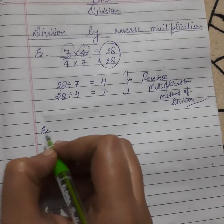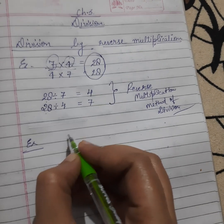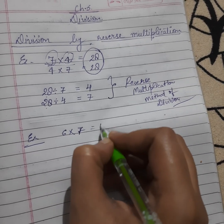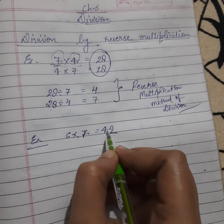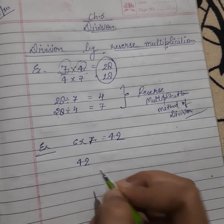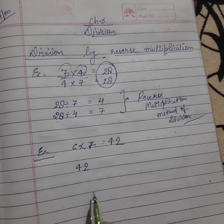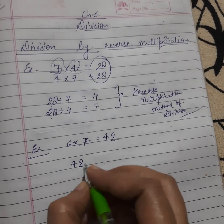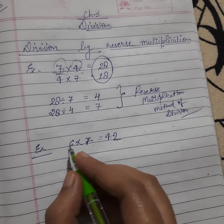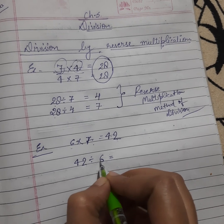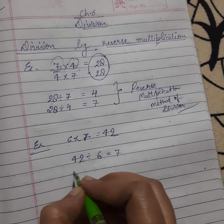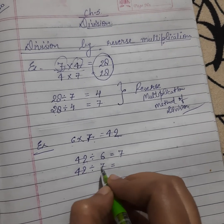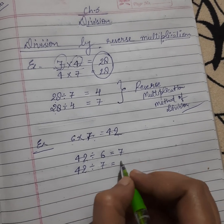Let's take another example. Suppose six multiplied by seven equals forty-two. If I want to get the answer using the reverse multiplication method, I take this result, forty-two, and divide it by its two factors one by one. First by six: in the table of six, how many times does forty-two come? Seven times. And if I divide forty-two by seven, then in the table of seven, how many times does forty-two come? Six times.